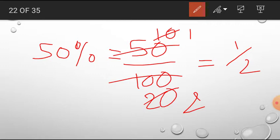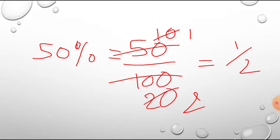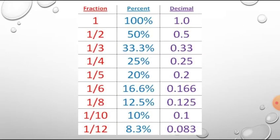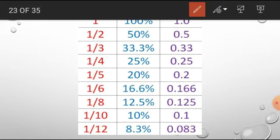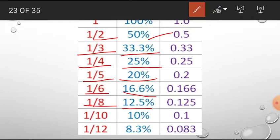In this way, we can solve any problem and convert all these fractions into percentages and percentages into fractions also. And see here, 100 percent means 1 by 1 and 50 percent means 1 by 2. 33.3 percent means 1 by 3 and 25 percent is 1 by 4. 20 percent is 1 by 5 and 16.6 percent is 1 by 6. And 12.5 percent is 1 by 8 and 10 percent is 1 by 10, and 8.3 percent is 1 by 12.